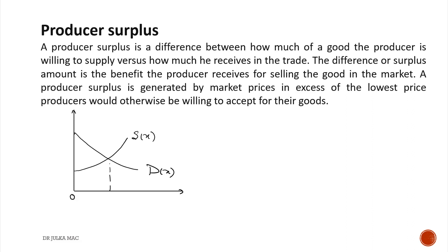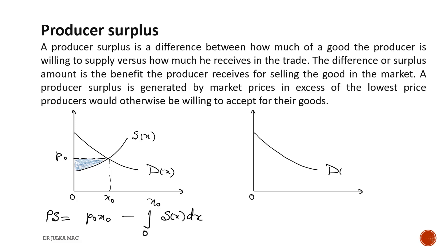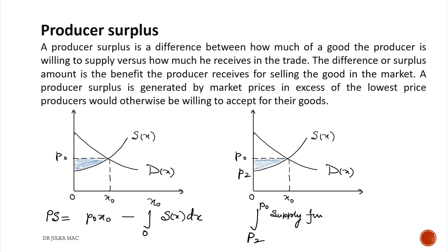Producer surplus. Under pure competition, the equilibrium demand x0 is obtained by equating the demand and supply function. Producer surplus can be calculated using the formula: p0·x0 minus integration from 0 to x0 of the supply function dx. Or we can calculate producer surplus with respect to p using the formula: integration from p2 to p0 of the supply function as a function of p, dp.